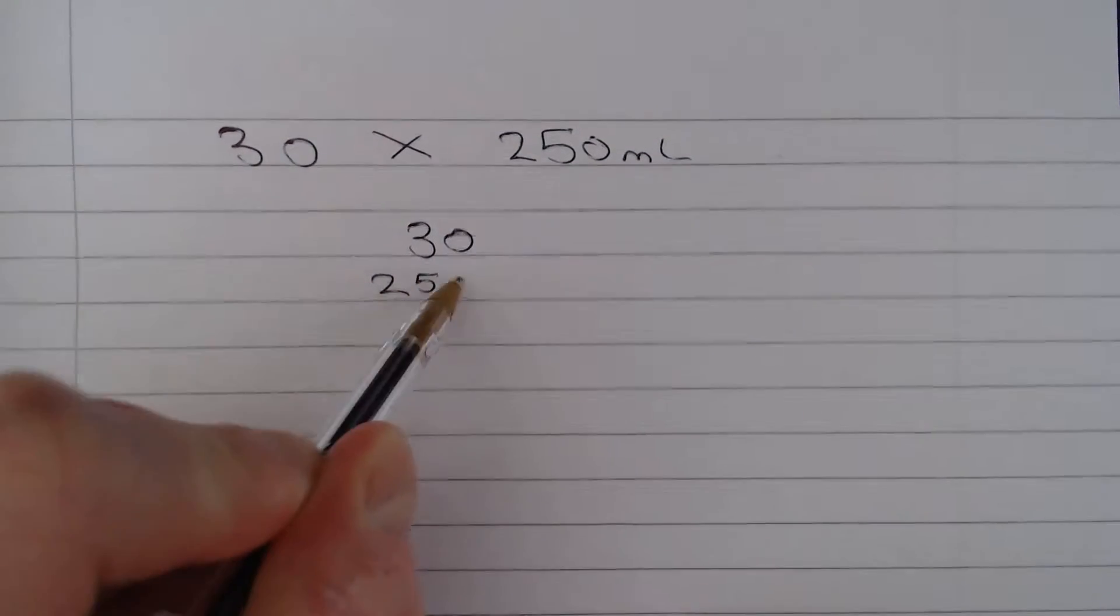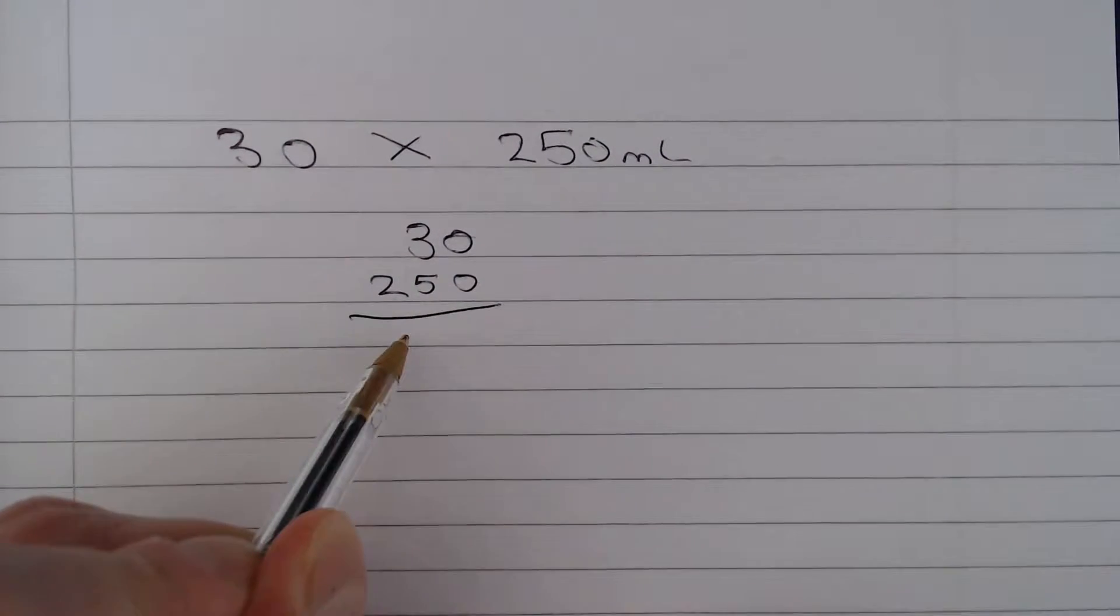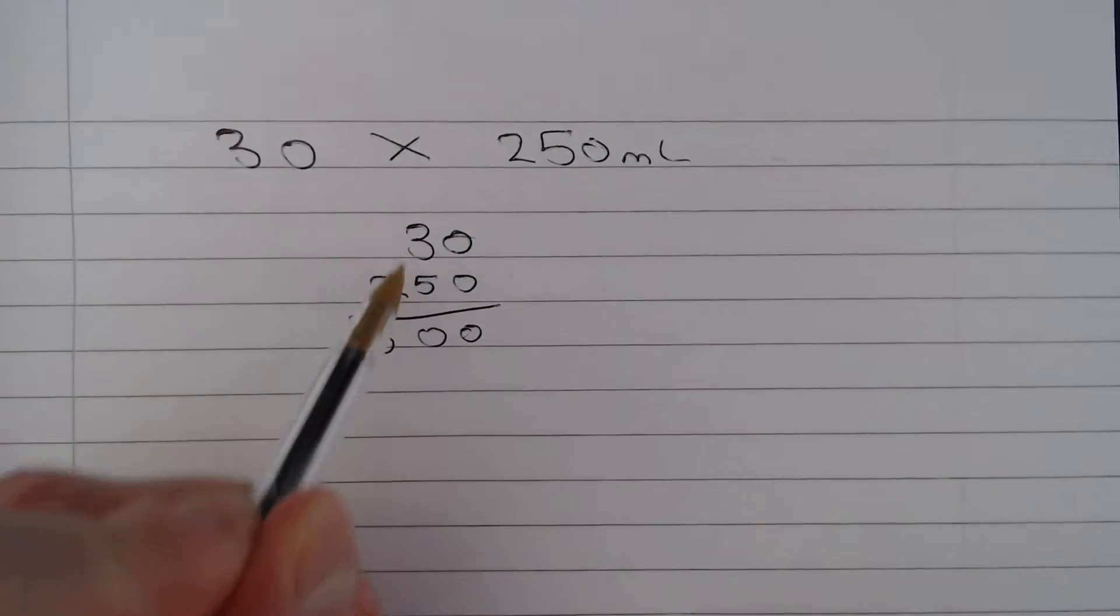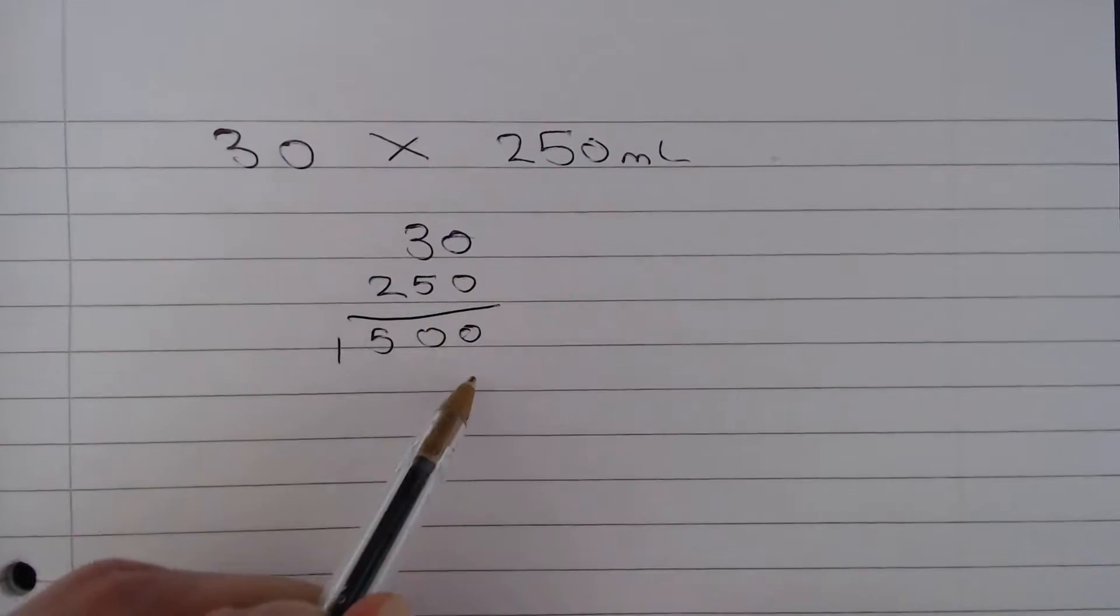So let's do this calculation here. We get 5 times 3 is 15 with 1, 2 zeros. We get 2 times 3 is 6 with 1, 2, 3 zeros.